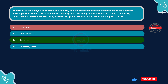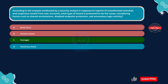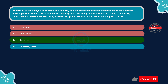Option A, brute force, is incorrect. A brute force attack involves systematically attempting all possible combinations of passwords until the correct one is found. While it's possible for a brute force attack to compromise user accounts, the observed factors such as shared workstations and disabled endpoint protection are not indicative of brute force. Brute force attacks are more commonly associated with repeated login attempts. Option B, rainbow attack, is incorrect. A rainbow attack uses pre-computed tables to crack password hashes and does not align with the observed factors, as rainbow attacks target password hashes rather than capturing keystrokes directly.